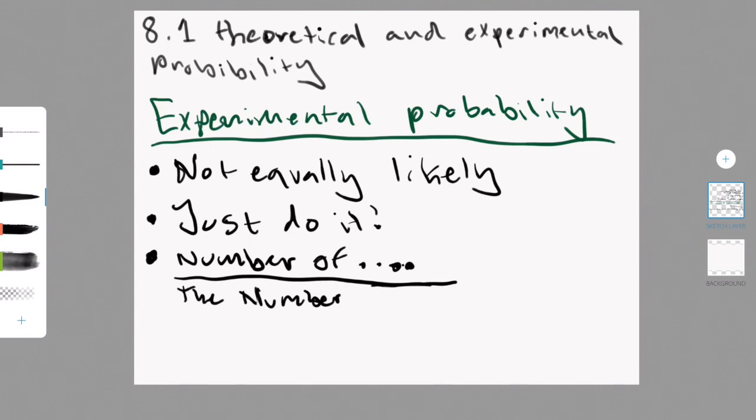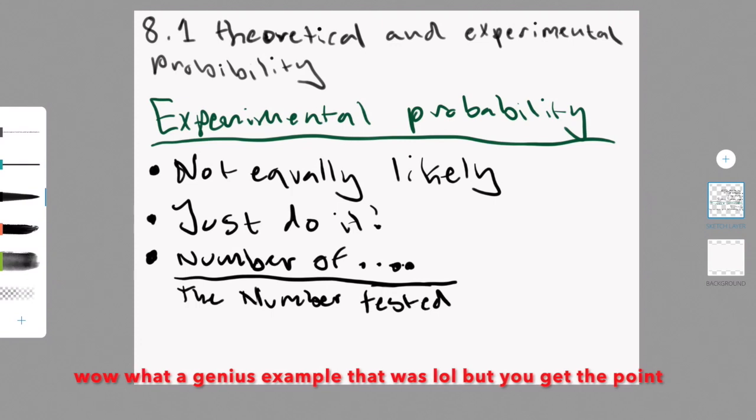So when doing this you would essentially do the number of, I put dot dot dot because it could be anything, divided by the number that you tested or number of trials. So let's say it's the number of broken door handles in your factory. So let's say you have five broken door handles and you looked at 25 doors, then you would do 5 divided by 25, which would be 1 fifth.